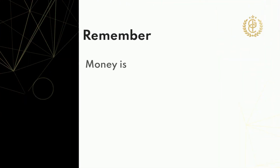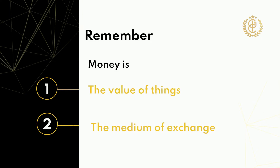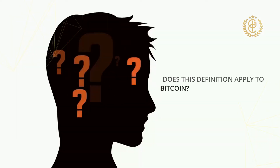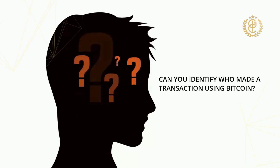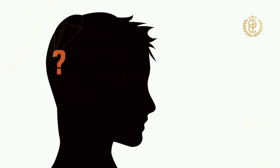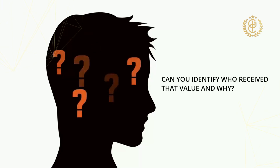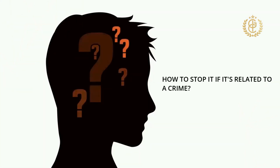Remember, money is the value of things — the medium of exchange that everyone knows will be an accepted form of payment for goods and services. Does this definition apply to Bitcoin? Can you identify who made a transaction using Bitcoin? Can you identify who received that value and why? How do you stop it if it's related to a crime?